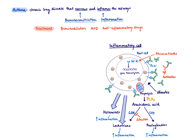Besides allergens, there are many other stimuli that can lead to mast cell degranulation — for example, cold or smoke. When any of these stimuli occur, an enzyme called phospholipase A2 is activated, which cuts arachidonic acid out of phospholipids in the cell membrane. Arachidonic acid can give rise to leukotrienes or prostaglandins via the enzymes LOX (lipoxygenase) and COX (cyclooxygenase). We have one drug that particularly targets lipoxygenase: zileuton. By blocking this enzyme, you produce less leukotrienes.